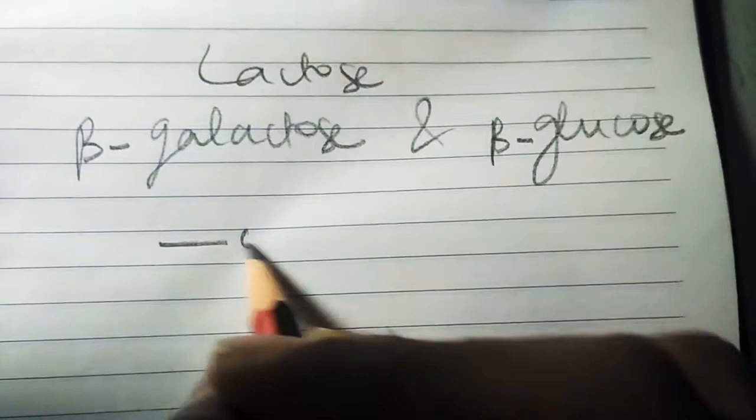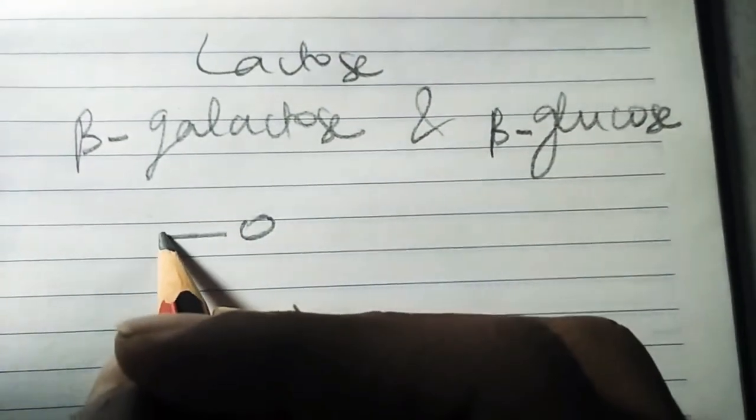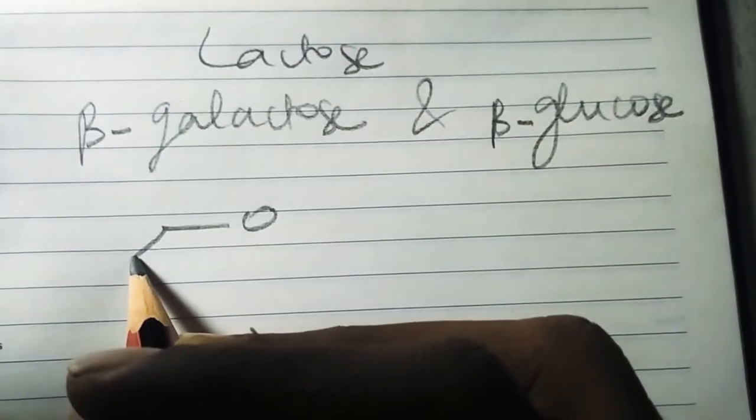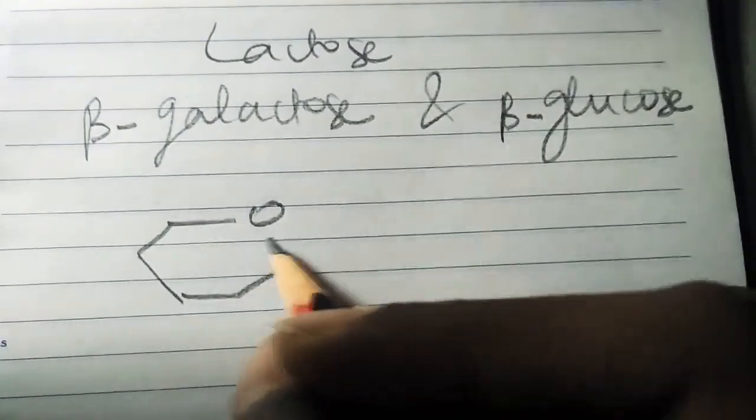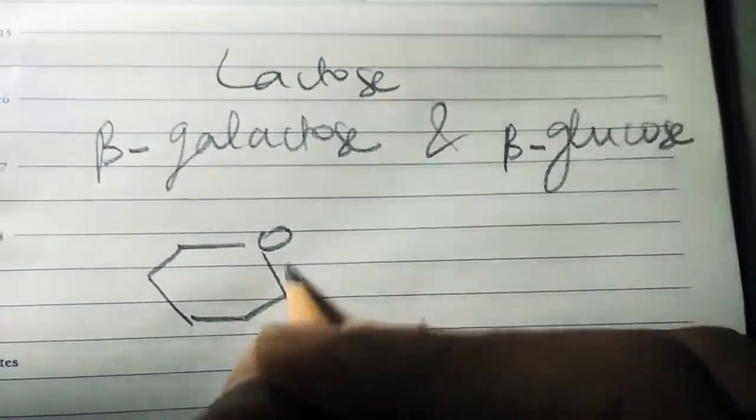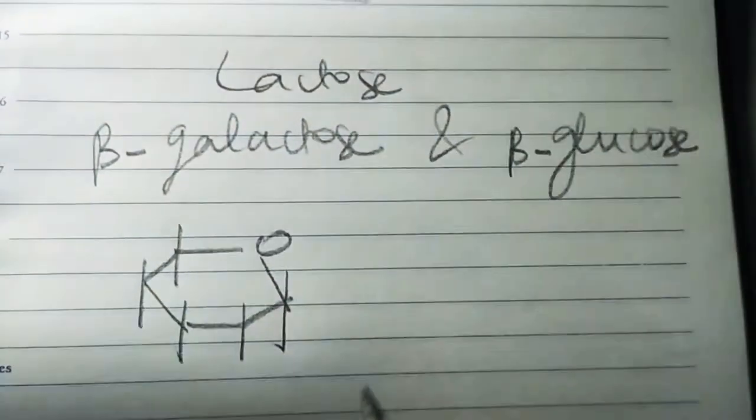Since we know the structure of glucopyranose is like this, this is the Haworth projection.